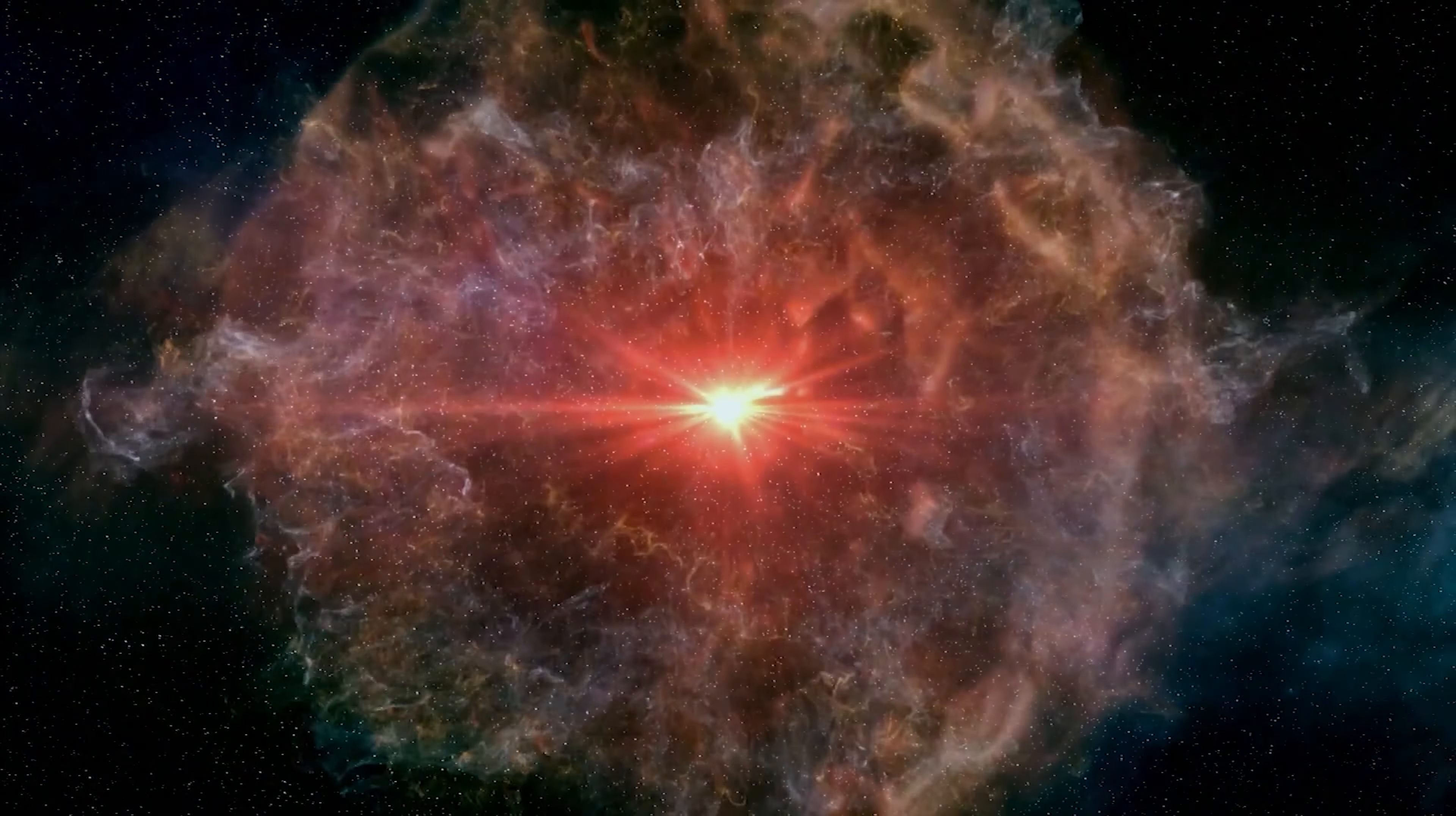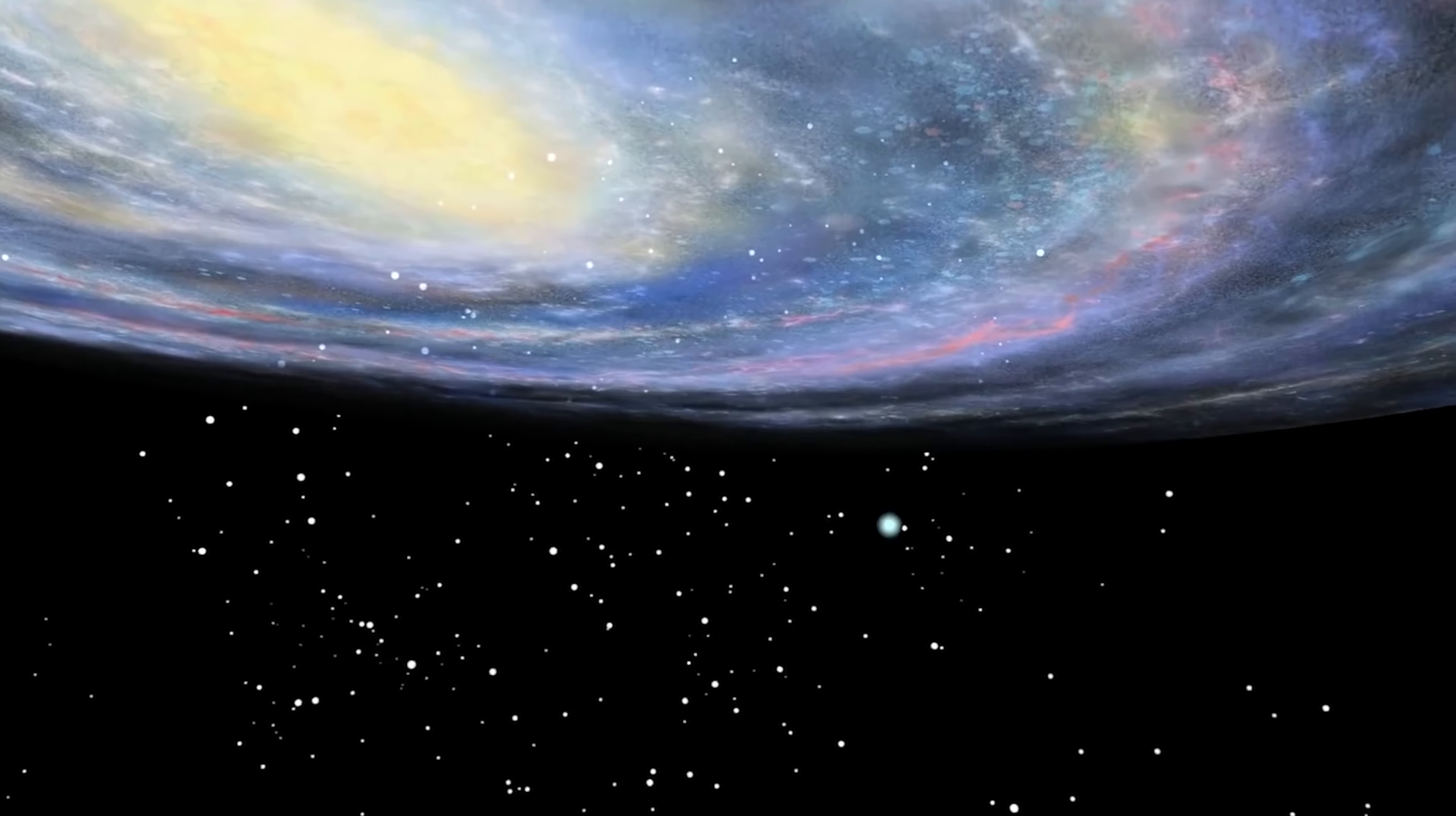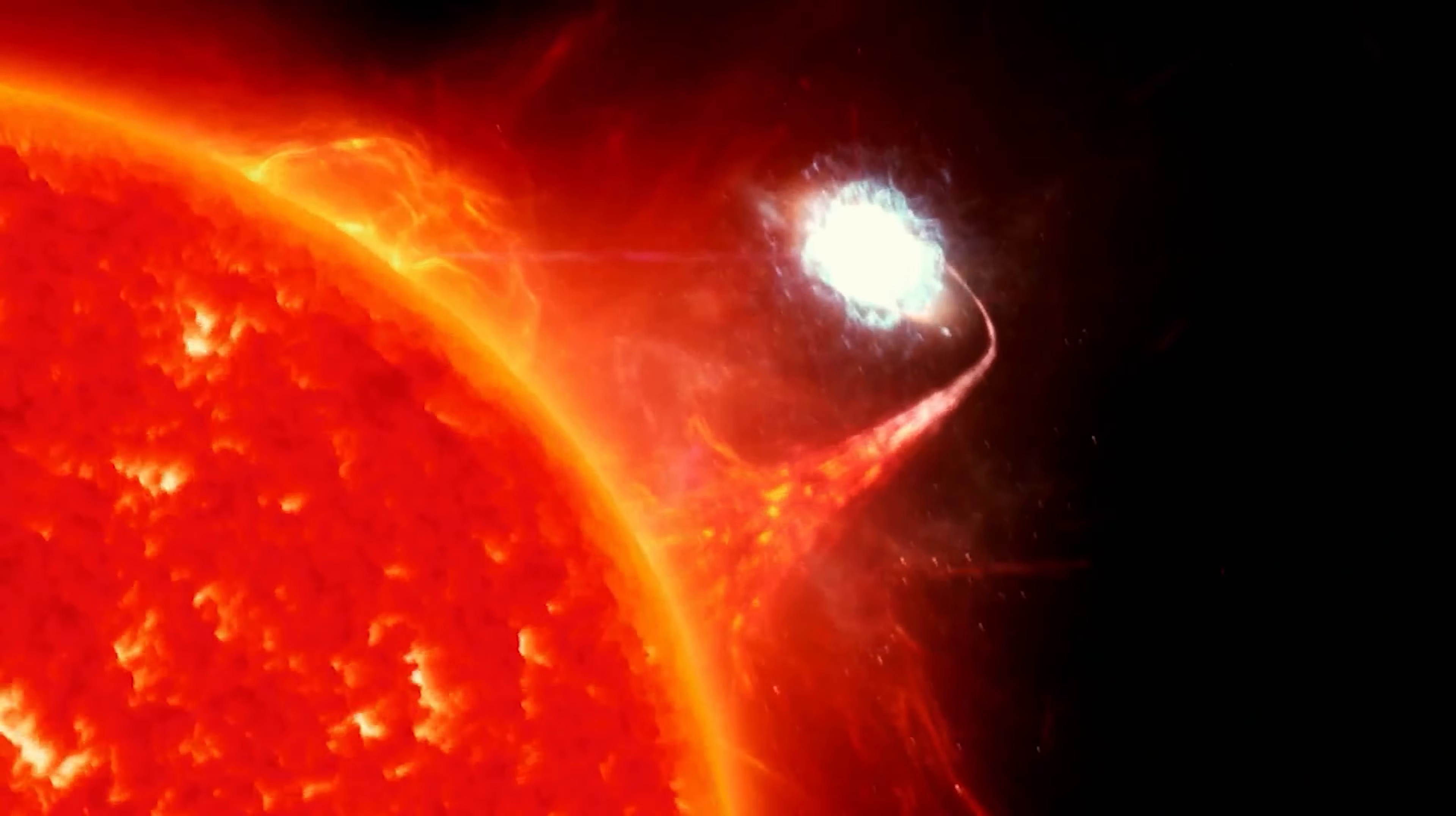LP-40365 became a white dwarf, and its partner, unable to bear the weight of the stolen material, collapsed gravitationally, and exploded into a supernova. This explosion threw LP-40365 into the distance. In general, this scenario is often seen and typical of many escape stars, and has been well studied.